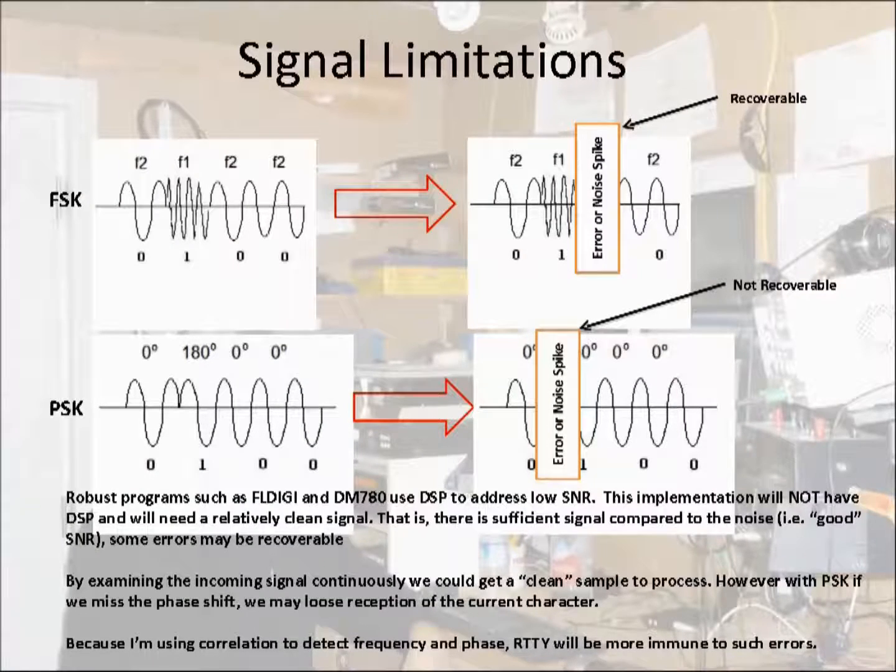Typical programs such as FL Digi run in a PC which uses DSP techniques to address low signal-to-noise. The Arduino can't do much digital signal processing and therefore the signal-to-noise ratio for RTTY and PSK needs to be much higher. However, it's important for the mechanism I use to address relatively small errors. For example, there could be errors from a noise spike, which is small compared to the bit duty cycle. I address these types of errors by taking signal samples and processing it several times within the bit duty cycle.